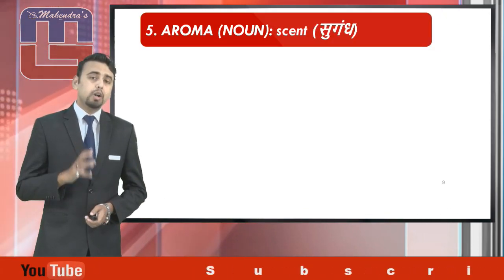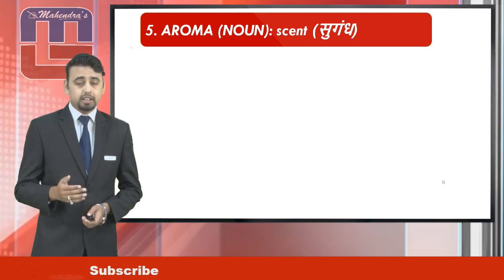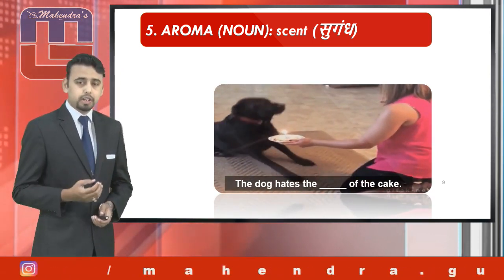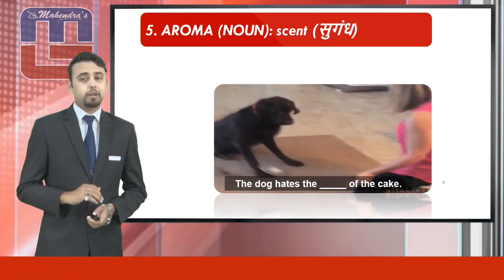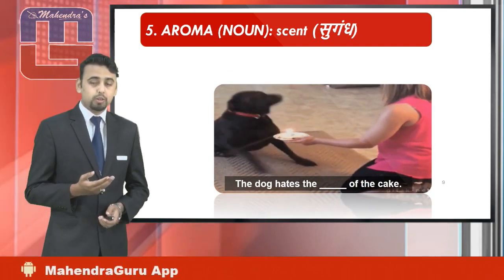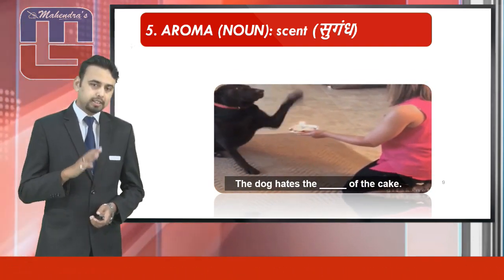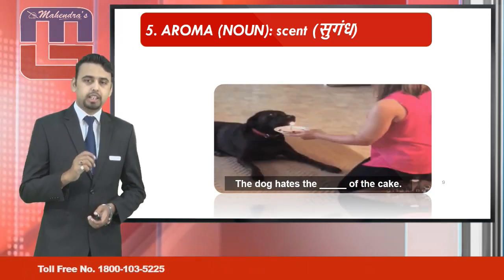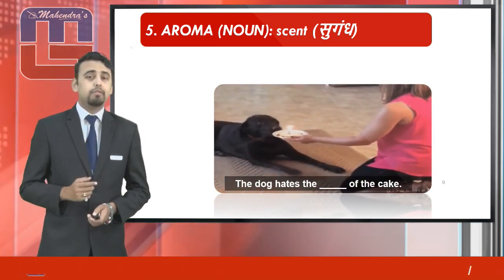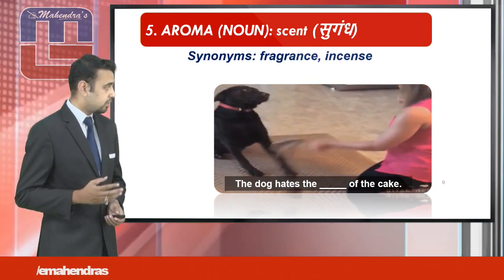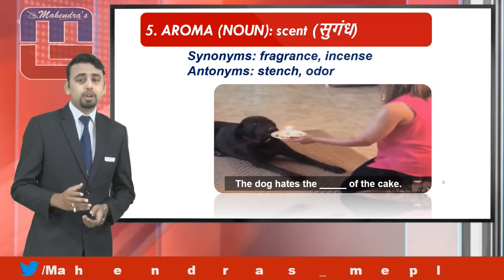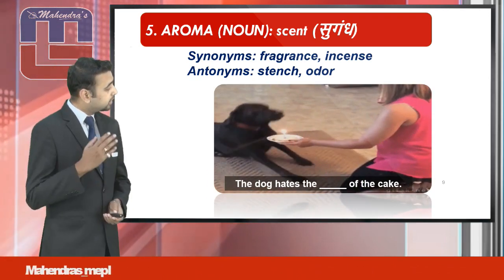Here's the last word: it's 'aroma.' Aroma, being a noun, means scent. Let's have a look at the usage. The dog hates the blank space of the cake — the dog didn't like the cake and threw it away. So the usage is: 'The dog hates the aroma of the cake.' The synonyms of aroma are fragrance or incense, and the antonyms are stench or odor.